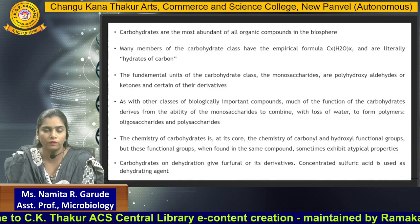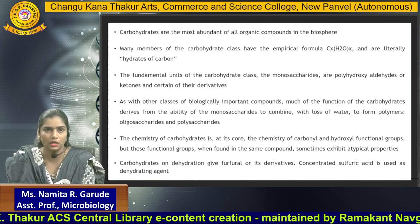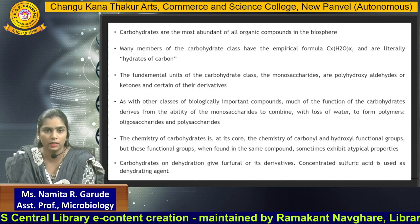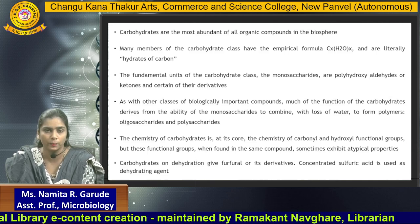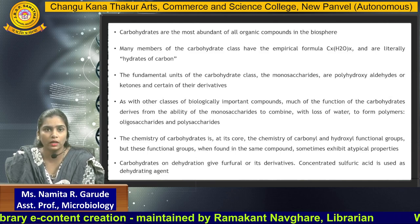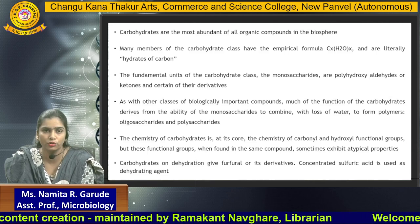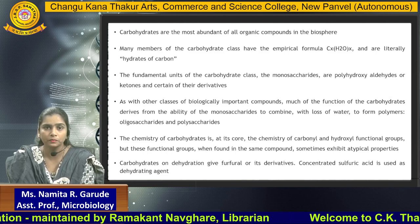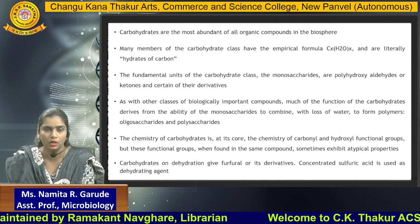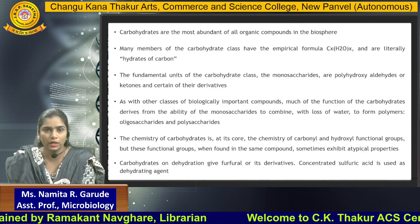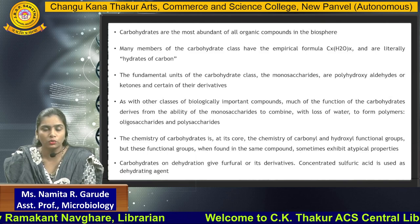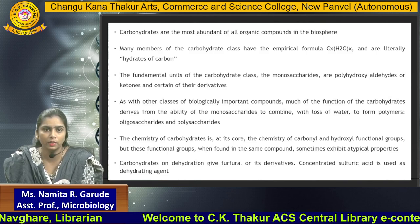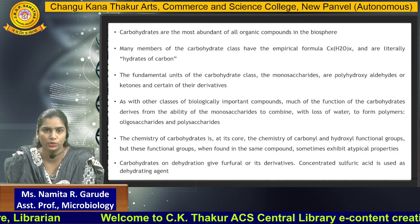They are of three types. The first one is monosaccharide, the second one is oligosaccharide, and the third one is polysaccharide. Monosaccharide is made up of a single unit of sugar; examples are glucose and galactose. Oligosaccharide is made up of 2 to 10 glucose units; examples are lactose and fructo-oligosaccharides.